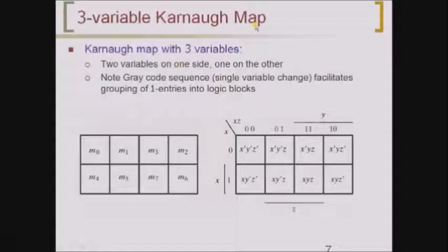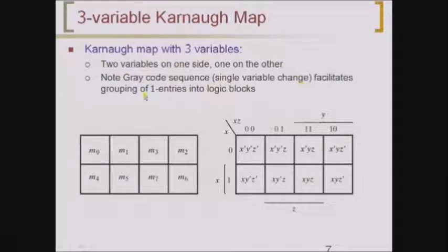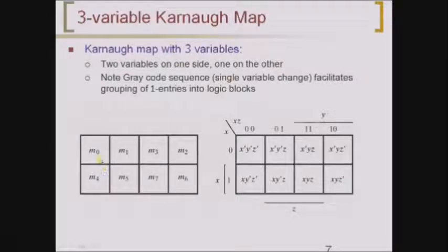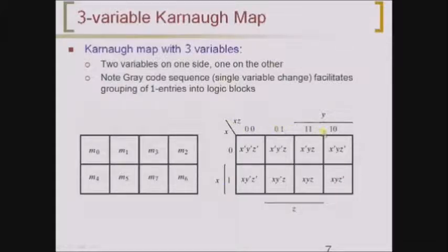Now let us see a three-variable Karnaugh map. Two variables are written on one side and one variable on the other side. Note that a gray code sequence is used — not binary sequence — to facilitate grouping of one-entries into logic blocks. With three variables you get eight minterms: M0, M1, M2, M3, M4, M5, M6 and M7, all represented with variable notation. One variable represents the rows and the other two variables represent the columns.